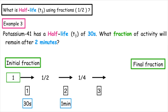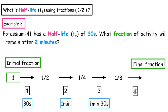If it underwent a third half-life, that would be one minute 30 seconds, which would leave an eighth. And then if it underwent a fourth half-life, that will give us a total of two minutes. So the final fraction will be a sixteenth.